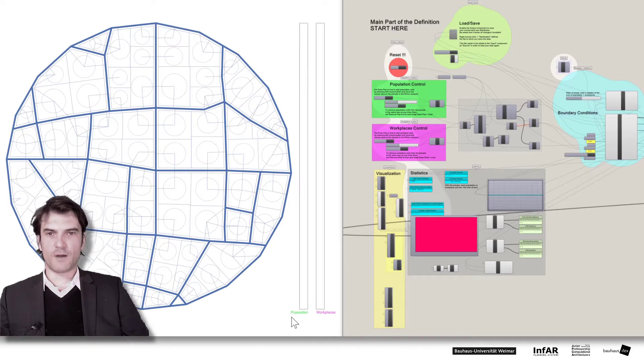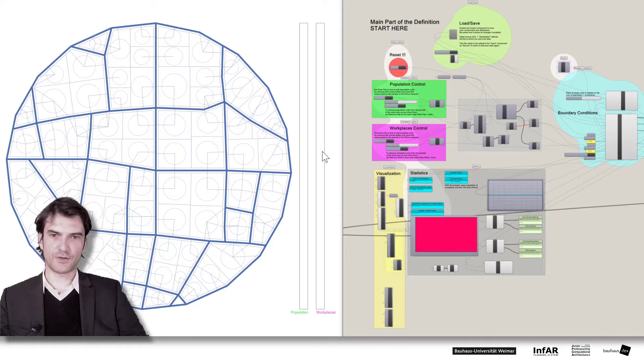And here you see these two bars. You see below population and workplaces, they show you how many units you have already distributed. And in the end of this lesson you have to distribute one thousand of each land use, means you have to fill up these two bars. But I will show you later how this works.